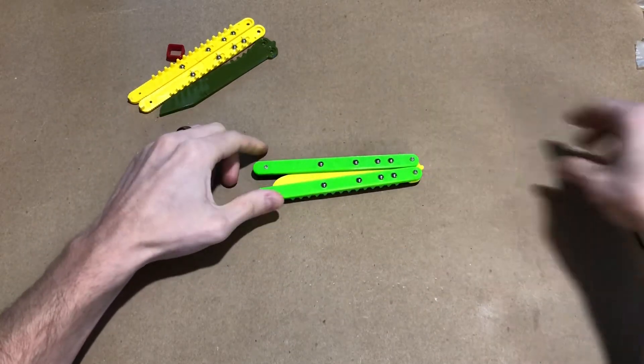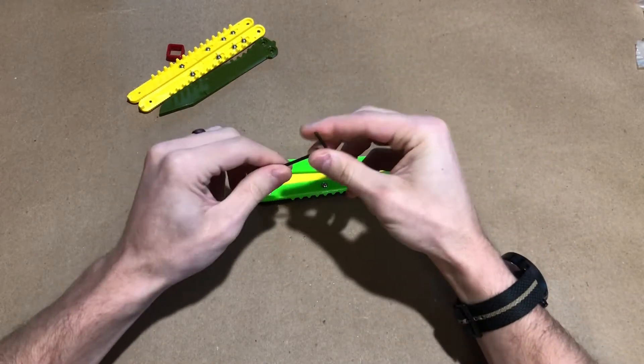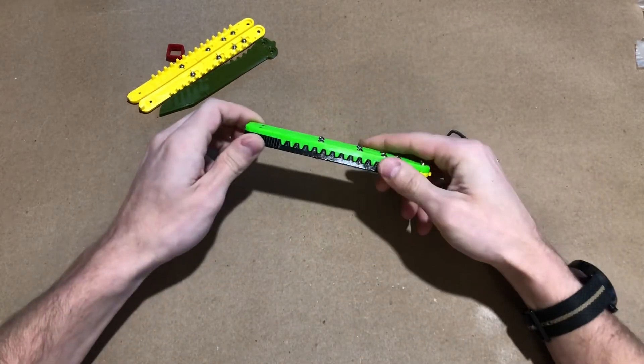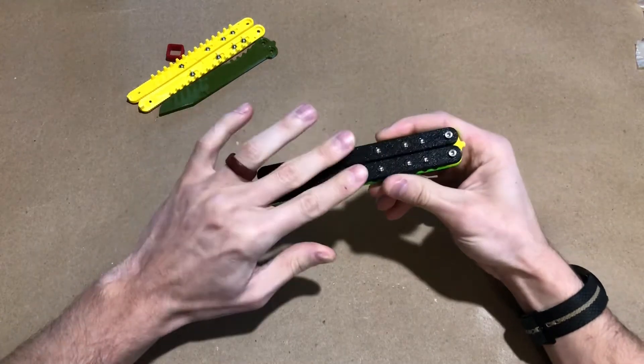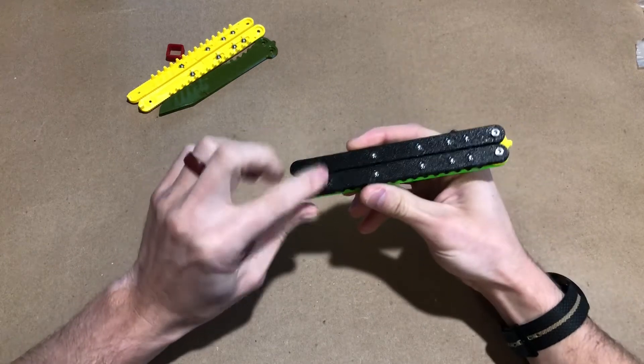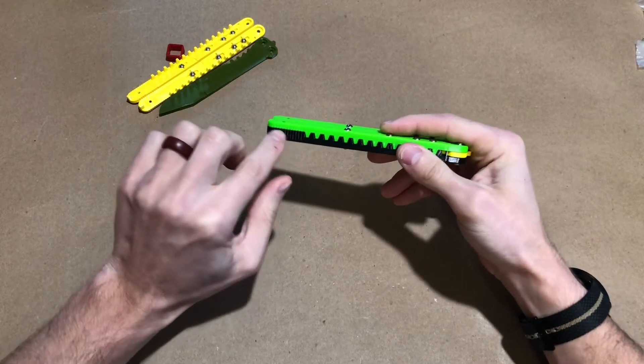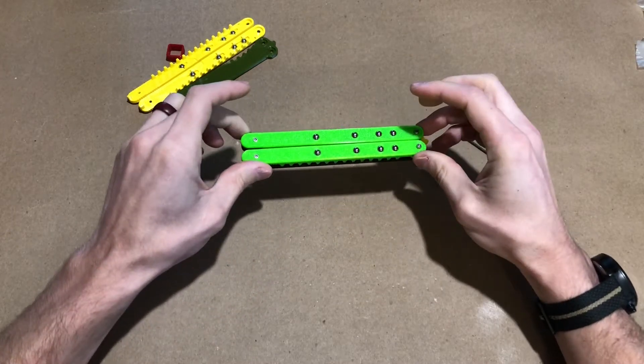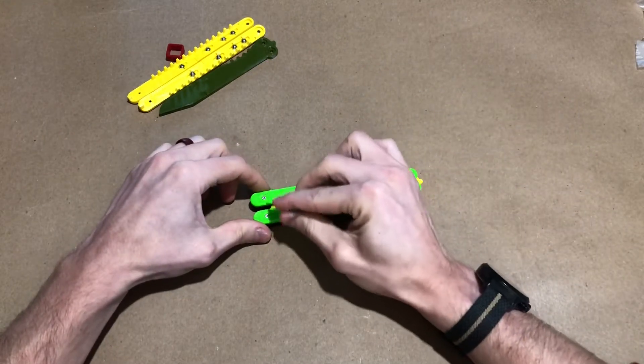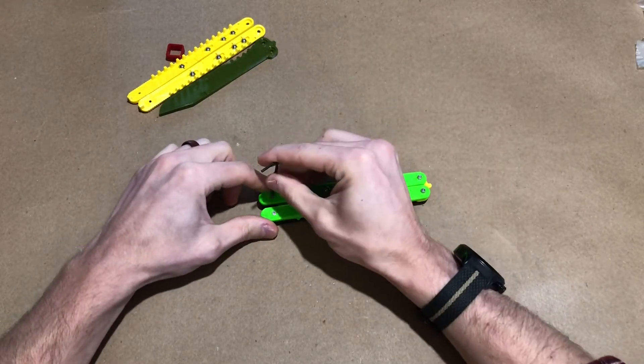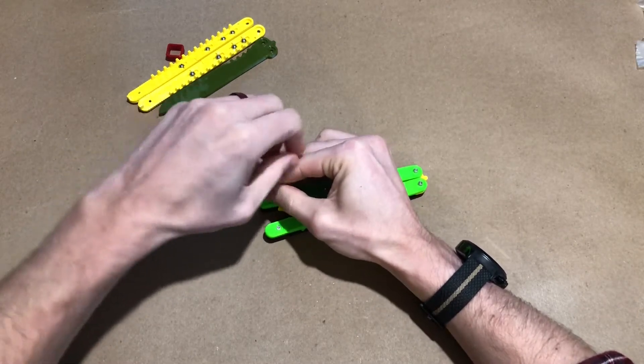So the only thing you'll need for this is the two millimeter hex key that came with the balisong. In this video I'm gonna refer to the top handle and the bottom handle. This is the bottom of the balisong, it's the side with the logo on it, and it's also the thicker side. You're gonna start with the bottom of the balisong down so that these screws at the base of the handles are exposed and I'll just unscrew them one by one.